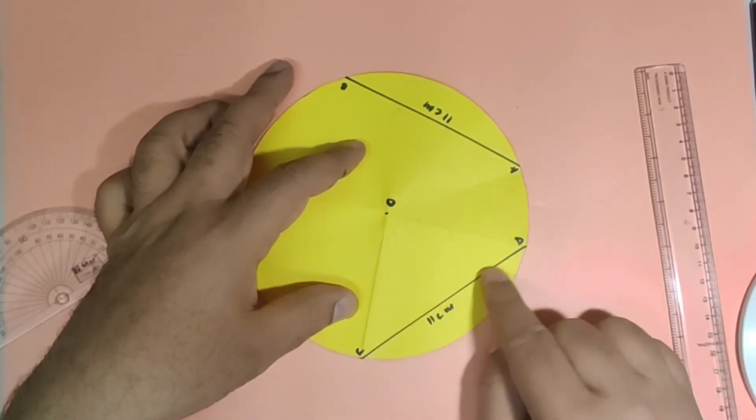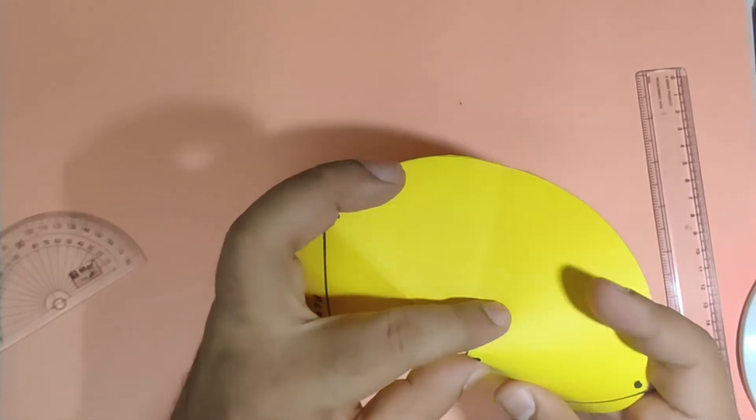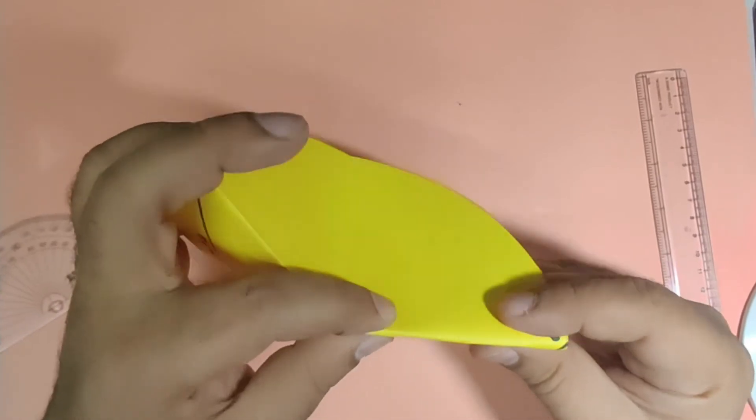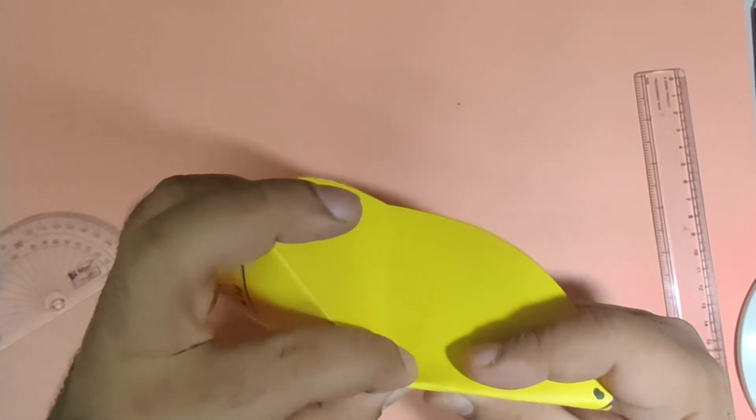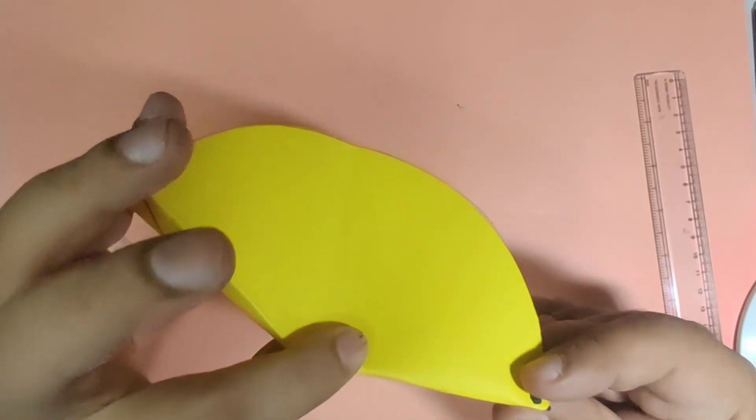Which is subtended by the chord CD. Similarly, let us crease the other subtended angle by the chord AB by the same procedure.